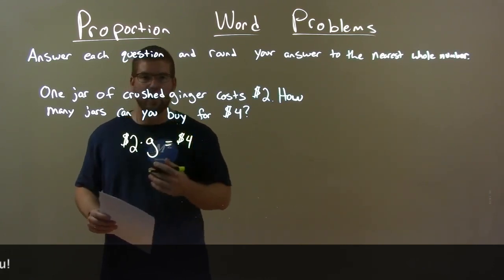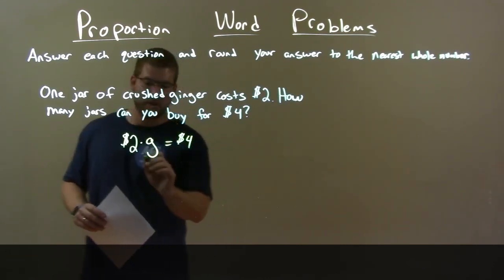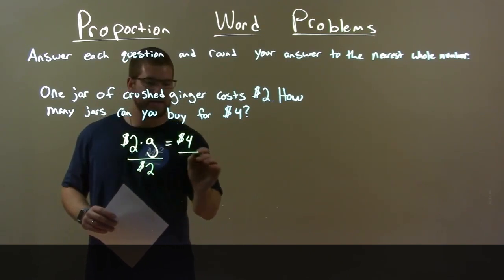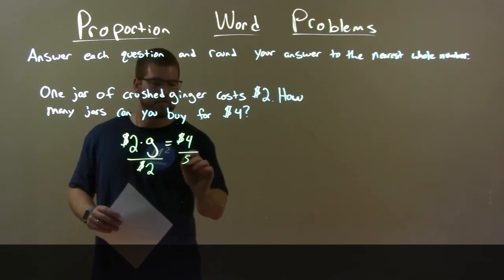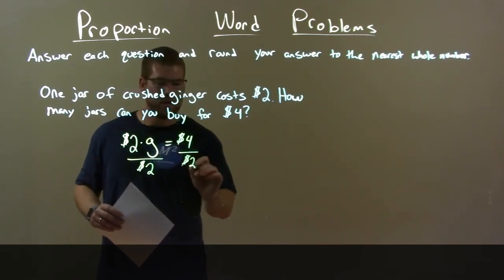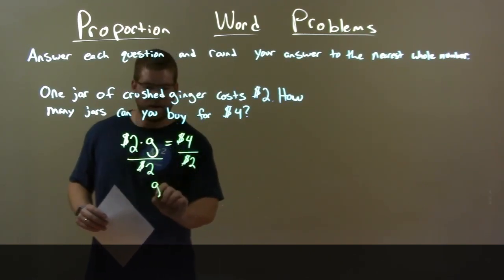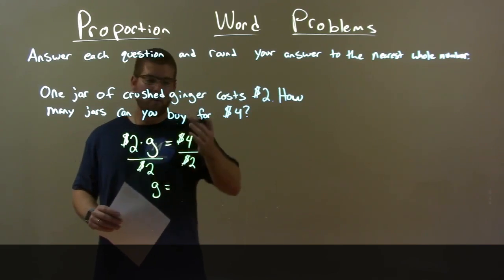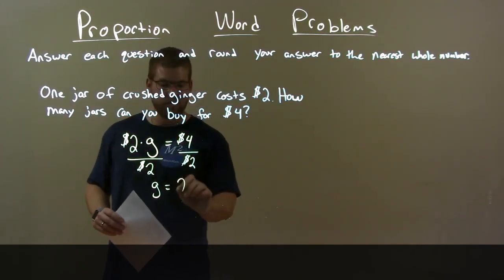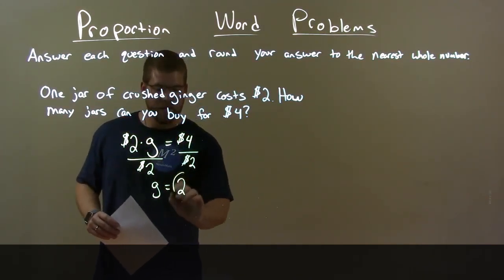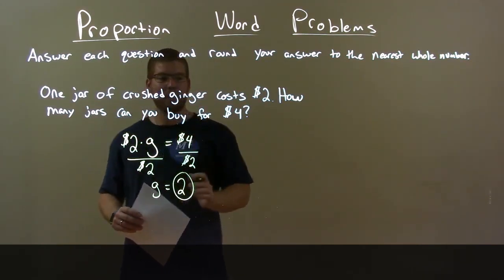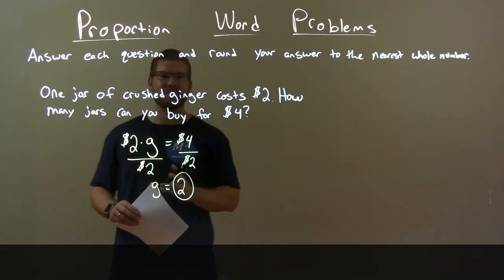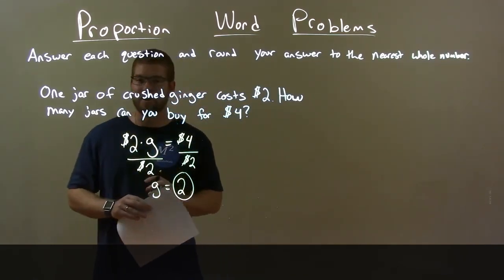Let's solve for G. Divide both sides by $2 to get G by itself. G equals 4 divided by 2, which is 2. So we can afford, with $4, two crushed ginger jars.